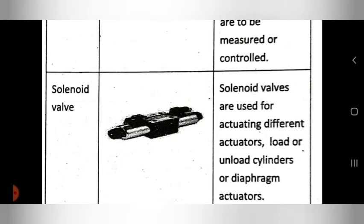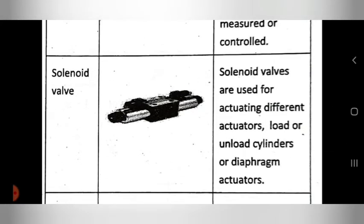The next output device is the solenoid valve. Here is the photo of the solenoid valve. The function is that solenoid valves are used for actuating different actuators — that is, to activate or actuate whatever actuators are used in the system.